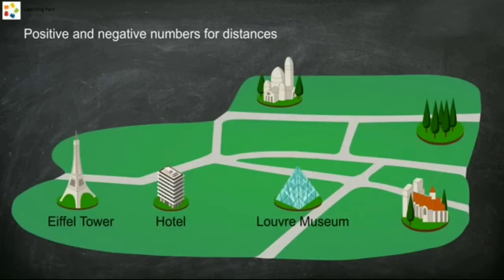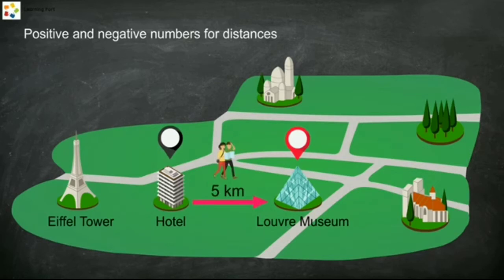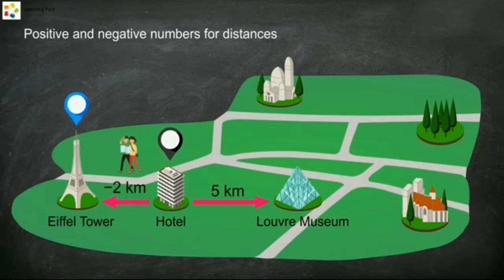Instead of using the terms 'going right' or 'going left' to give directions, we can use positive or negative numbers to indicate directions. For example, we can say the Louvre Museum is five kilometers from the hotel, and the Eiffel Tower is negative two kilometers from the hotel in the opposite direction.